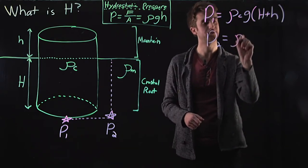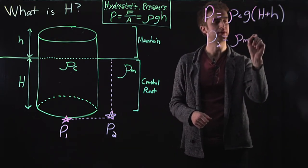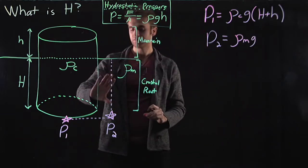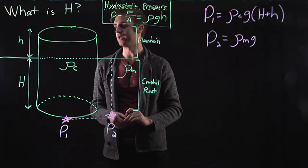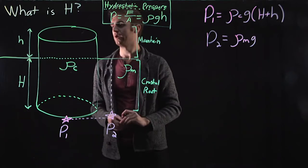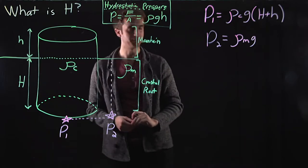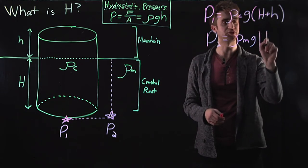So we can write rho m, again, times g. And all of this mantle rock is just described in terms of big H. Again, there's no material at height little h above point p2. So it's just big H here.